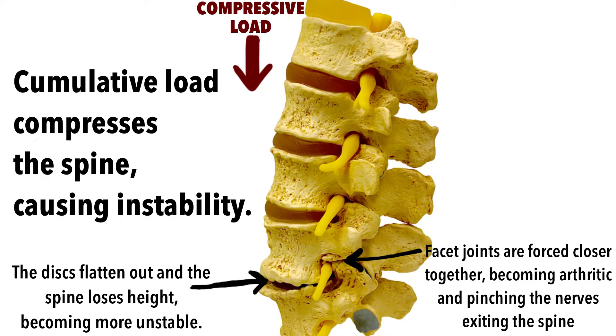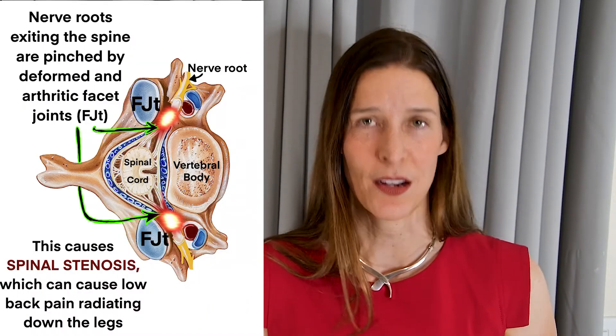The spine also becomes more unstable over time. As the vertebral column continues to be loaded under pressure, the discs flatten out and the vertebral column actually loses height. This loss of height forces the facet joints in the back closer together, which causes them to grind together and become arthritic. As the spinal column collapses on itself, the space for nerve roots exiting the spine also gets smaller.